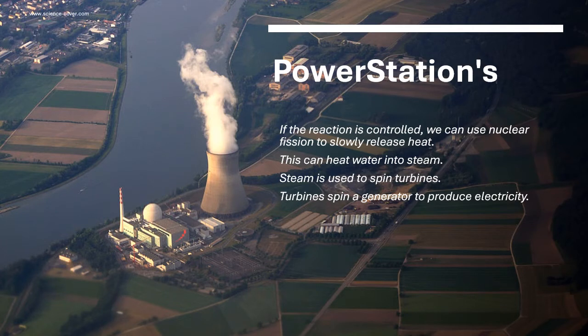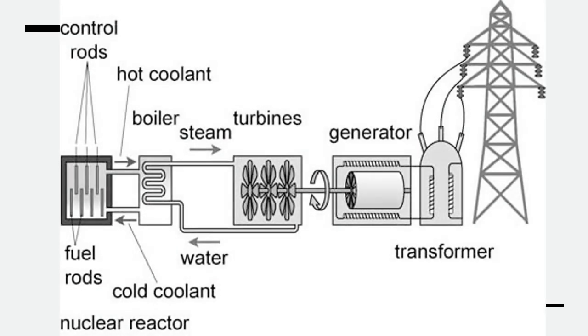If we control the chain reaction to slow it down, we can release the heat at a slower rate, and this is what happens inside a power station. We can slowly release the heat and use it to heat water into steam. We can use the steam to spin turbines, and the turbines will spin a generator producing electricity. This diagram shows our nuclear power station with the generator, turbines, and the section containing the nuclear fuel.